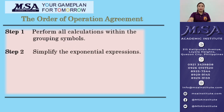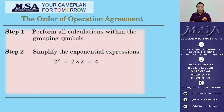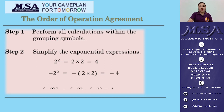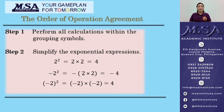Step 2: simplify the exponential expressions. For example, we have 2 squared, which equals 2 times 2, equals 4. Another example: negative 2 squared — you put the negative sign outside the parentheses and then perform 2 squared, which gives us negative 4. Another one: negative 2 quantity squared equals negative 2 times negative 2, which gives us positive 4. So those are examples of exponential expressions.